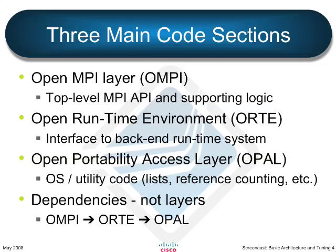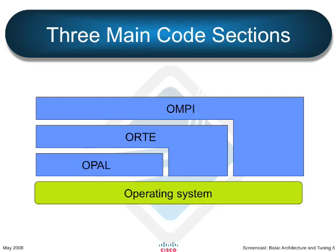One thing to realize here is that these are dependencies, not layers. So OpenMPI depends on ORTE, depends on OPAL. But it doesn't necessarily mean that you have to go through all three layers to get to the network. Here's a picture of what it looks like — you can see how the dependencies are layered on top of each other, but they can also touch the operating system directly if they need to. So for example, the MPI layer can go straight out to the network stack.